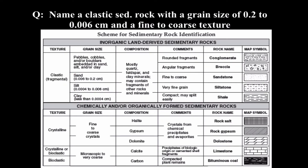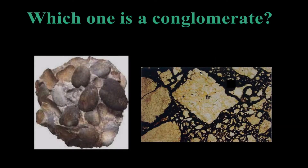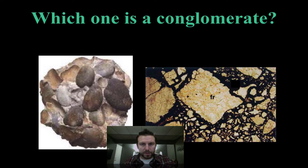For example, if we had a clastic sedimentary rock with a grain size of 0.2 to 0.006 centimeters, and the reference table tells us that corresponds to a coarse texture, then looking at the comments section — which says 'find the course' — this rock must be sandstone. It's as simple as that: grain size determines the type of clastic sedimentary rock.